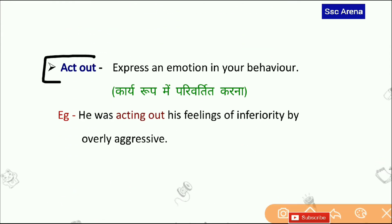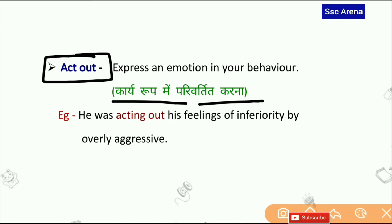Next है हमारा — Act Out. Act Out का मतलब होता है कारी के रूप में परिवर्तित करना। किसी भी emotion को जब हम बाहर निकालते हैं — जैसे हमें गुस्सा आ जाता है तो हम किसी पर sudden attack कर देते हैं। तो हम अपने emotion को Act Out कर रहे हैं — अपने काम को बाहर निकाल रहे हैं।